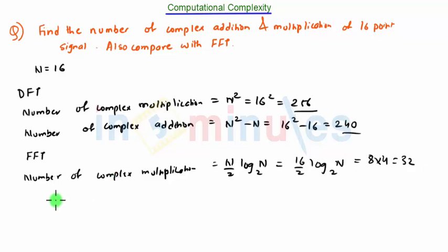For the number of complex additions using FFT, the formula is N log₂N. That is 16 log₂16.